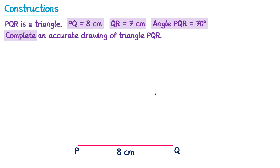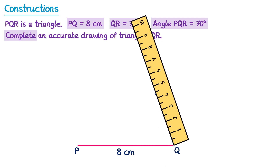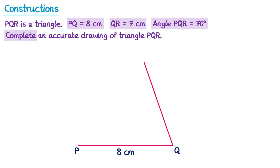But we also know that line QR needs to be 7 centimetres. So if we take a ruler and draw a line that goes through this point we marked, that's 7 centimetres long, then this line will be 7 centimetres and this angle will be 70 degrees. Which means this is the point R, and we can connect that down to P to complete our triangle.